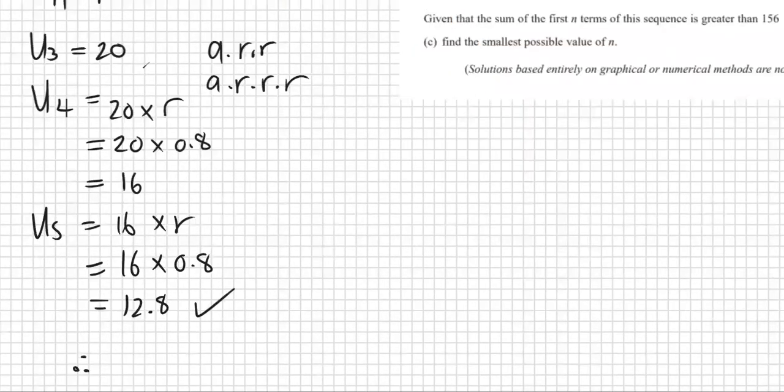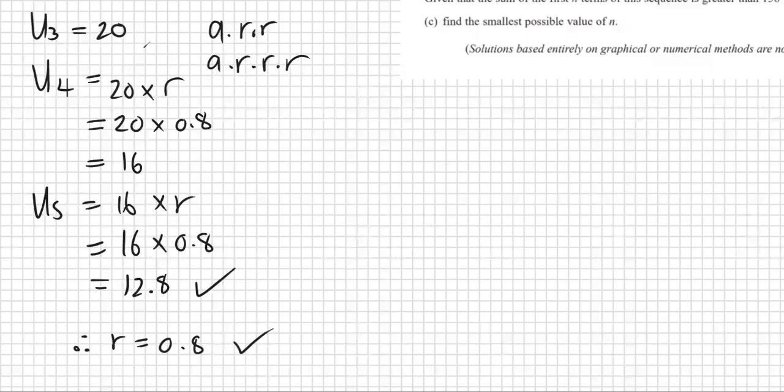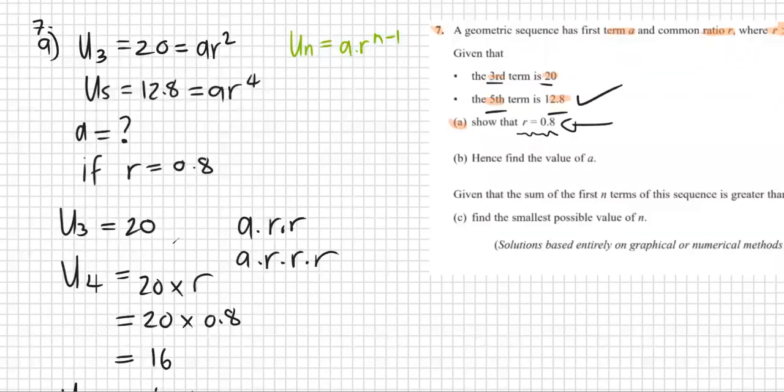Therefore, we can conclude that r is, in fact, 0.8, by trial and error. Again, that's not my favorite type of question. I don't like it when they don't use algebra but use some sort of fuzzy logic.